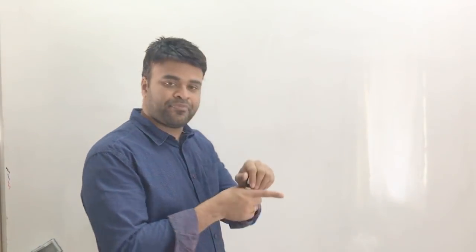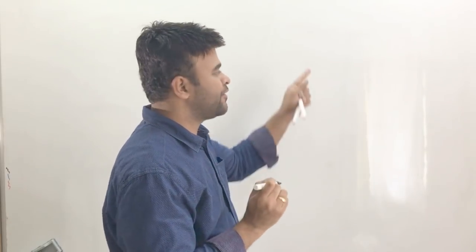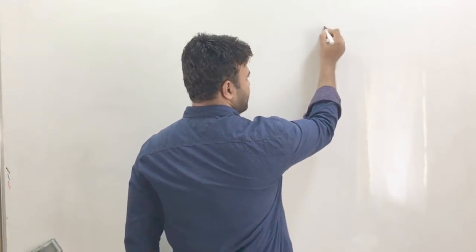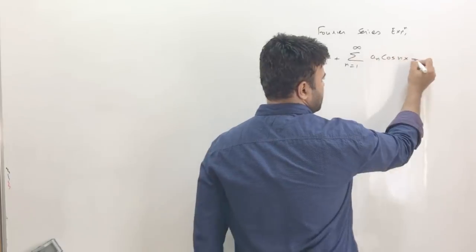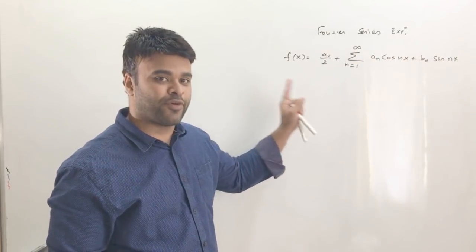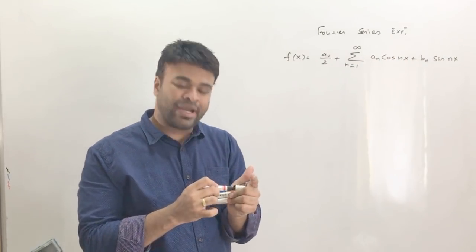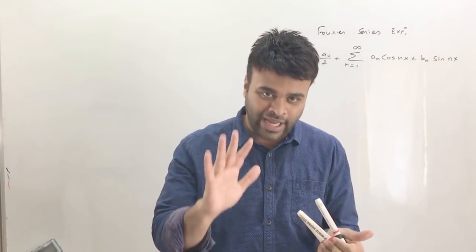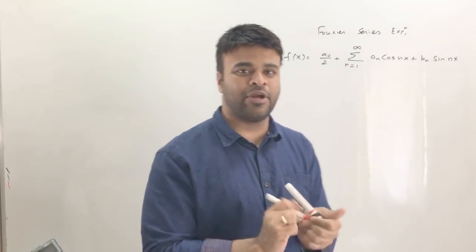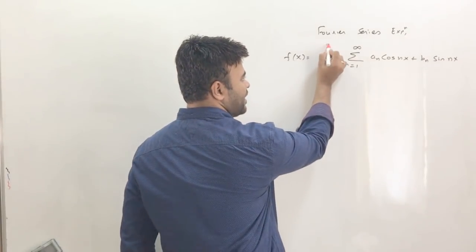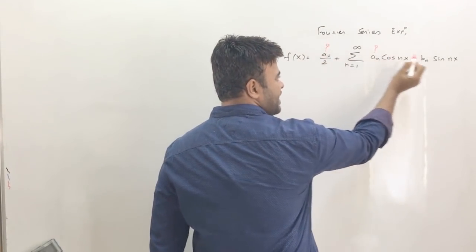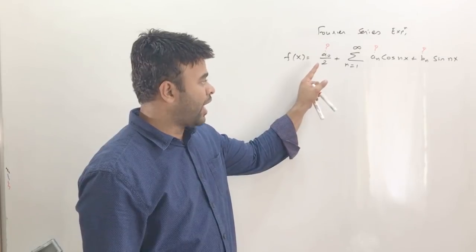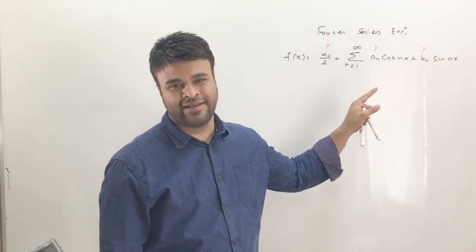I'm going to teach you Fourier series really quick. The first thing is the Fourier series expression — this is a standard expression. When you get a question in an exam asking you to find the Fourier series of a function, it's basically asking you to find three things: what is a₀, what is aₙ, and what is bₙ?